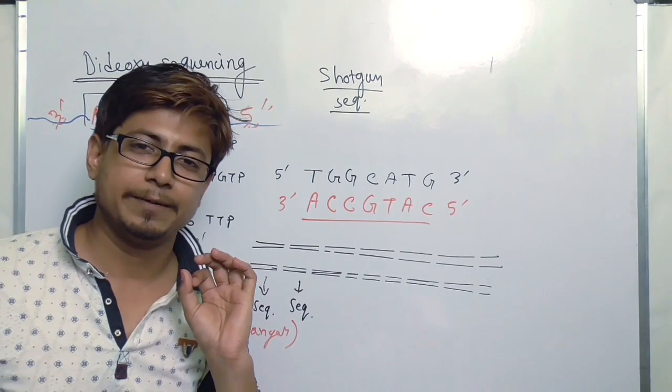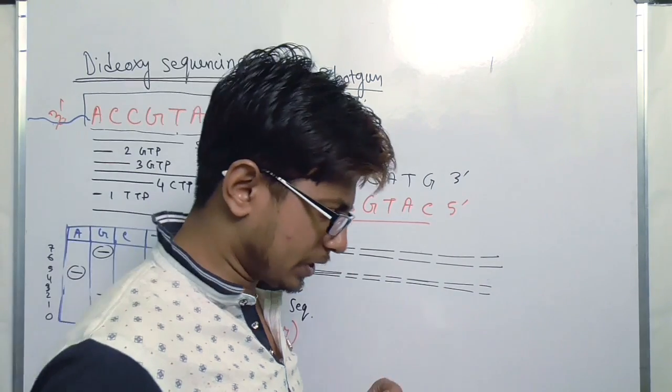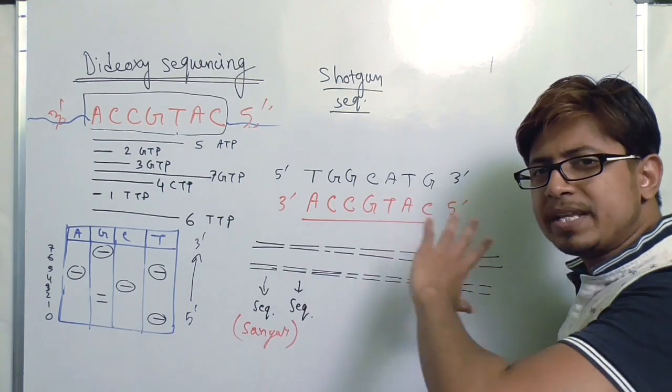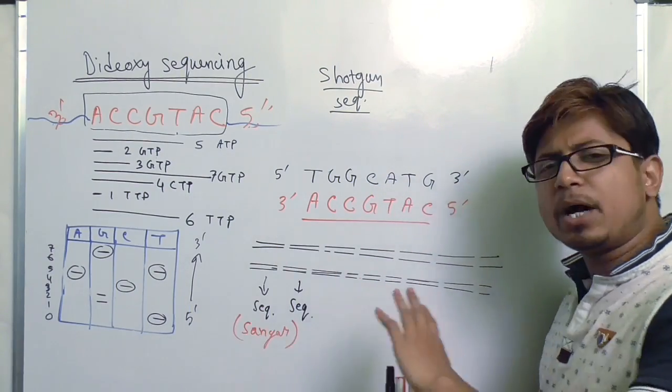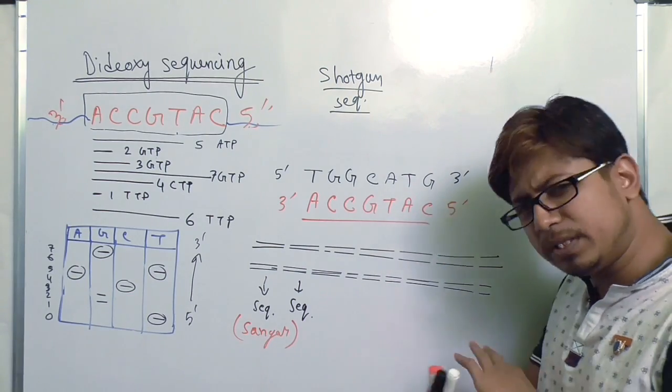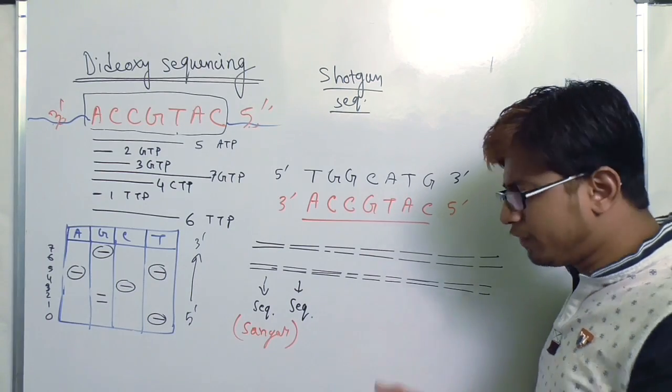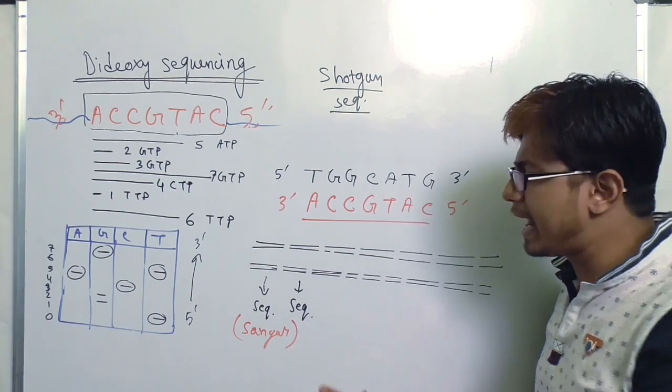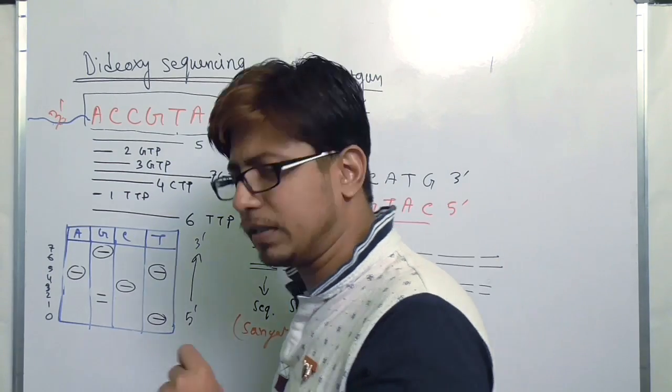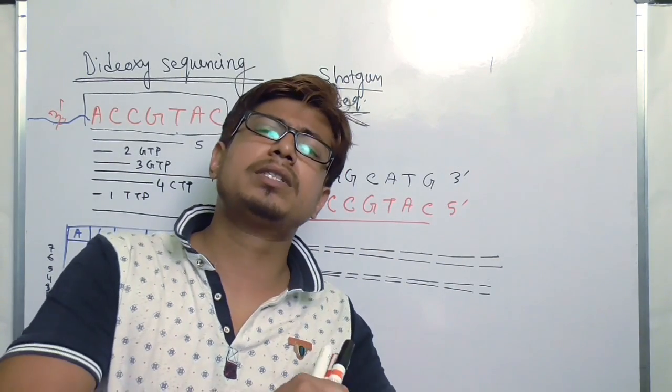Ultimately we get the sequence of each of those fragments. Now these fragments are known as contigs, or contiguous sequences. Because these sequences, as I told you, in different reaction tubes same DNA broken down randomly without any specification. Whatever sequence we get, different lengths of the band, we got the sequence for all these small fragments of the DNA.